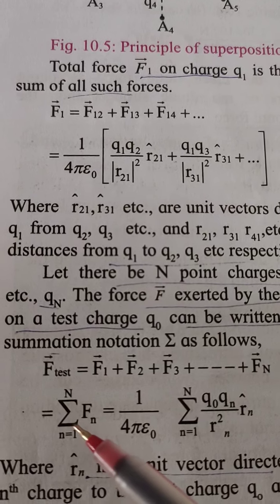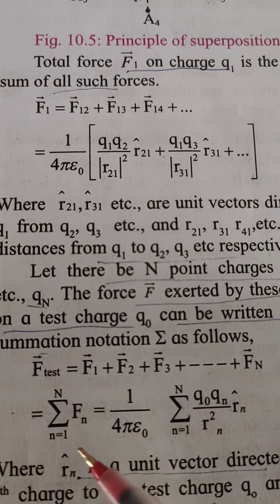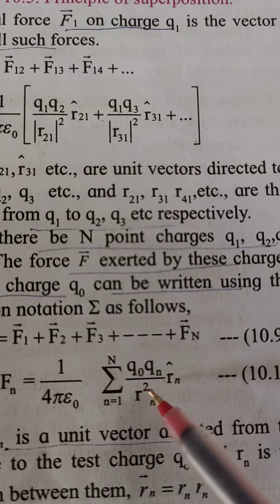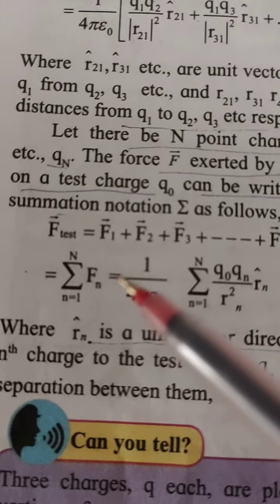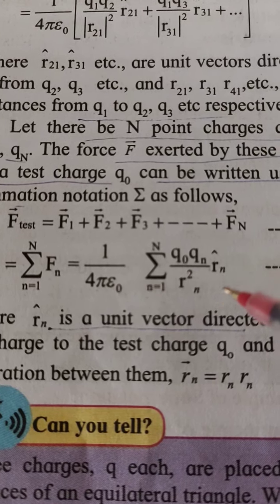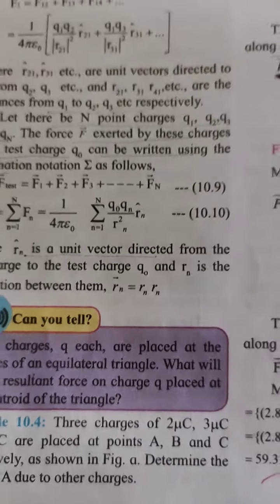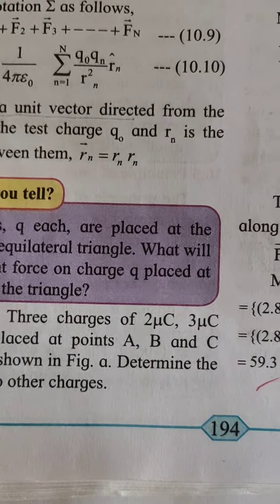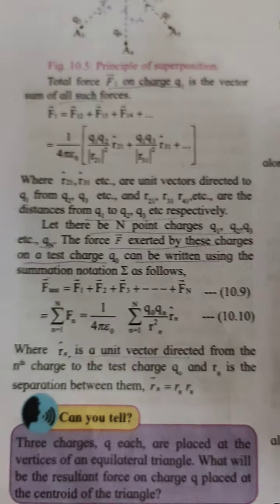The principle of superposition states that the total force acting on a charge equals the vector sum of forces exerted by each and every other charge in the system. Therefore the total force F = F1 + F2 + F3 + ... + Fn = (1 / 4πε₀) × Σ (Qi Qj / Rij²) × R̂ij. This is the principle of superposition of charges. Dear students, please read page 194, and if you have any queries, ask me. Thank you for watching.